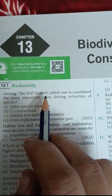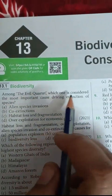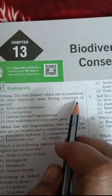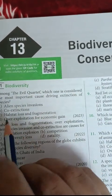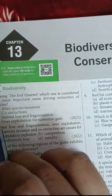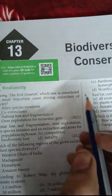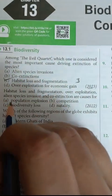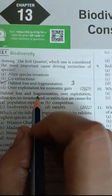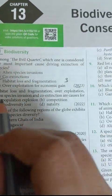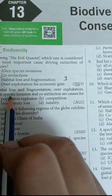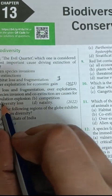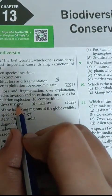Among the evil quarters, which one is considered the most important cause driving extinction of species? Habitat loss and fragmentation. The four evil quarters — habitat loss and fragmentation, over-exploitation, alien species invasion, and co-extinction — are the main causes for biodiversity loss.